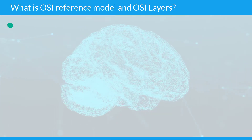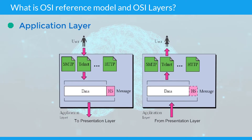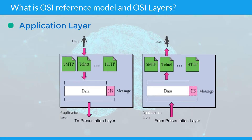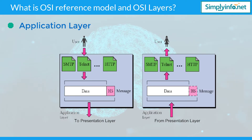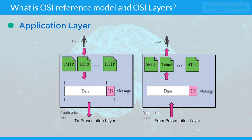Application layer: This is the layer at which communication partners are identified, network capacity is assessed, and that creates a thing to send or opens the things received.